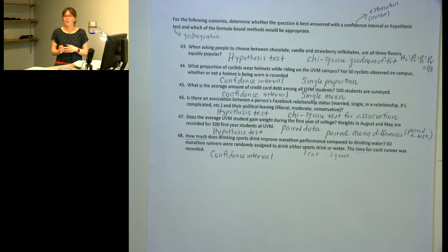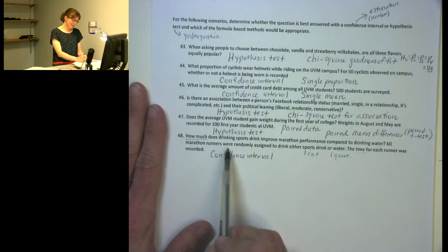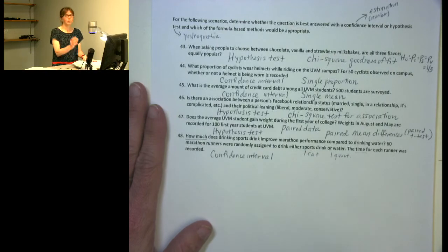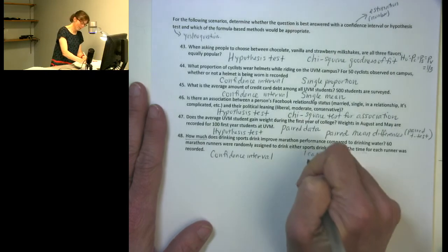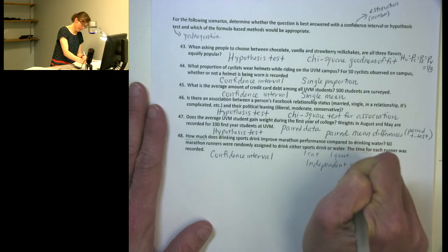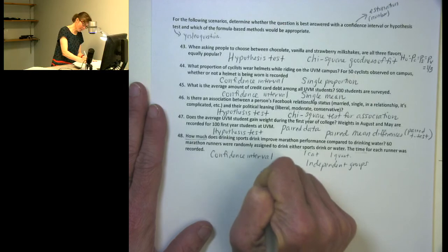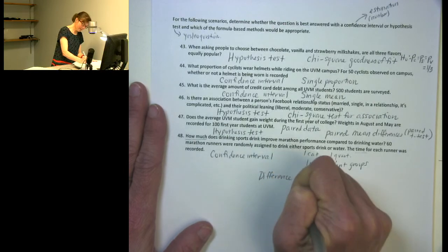So for example, I have to ask myself in this situation, do I have paired data or independent groups? Since they were randomly assigned to do either the sports drink or the water, but not both, I have independent groups. So in this situation, I'd focus on a difference in means.